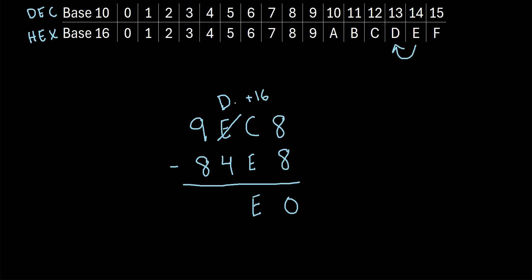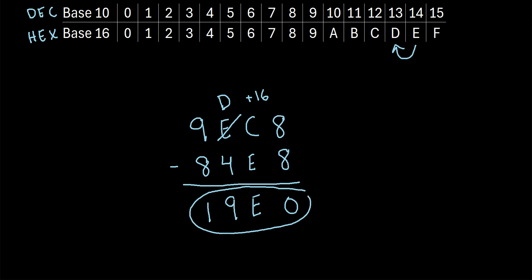Moving on to the next column, we have D minus 4. D is the same thing as 13, so we really have 13 minus 4, which is 9. And then lastly, we have 9 minus 8, which is just 1. So our final answer is 19E0.